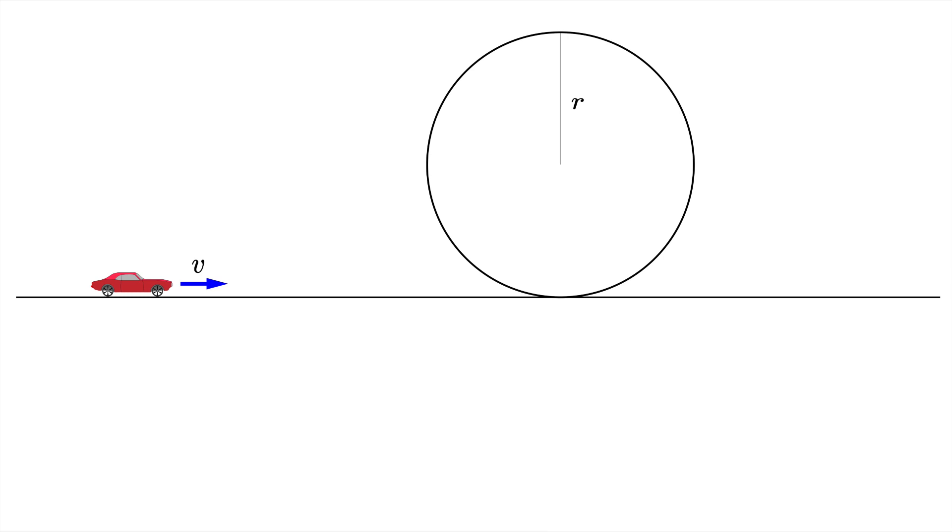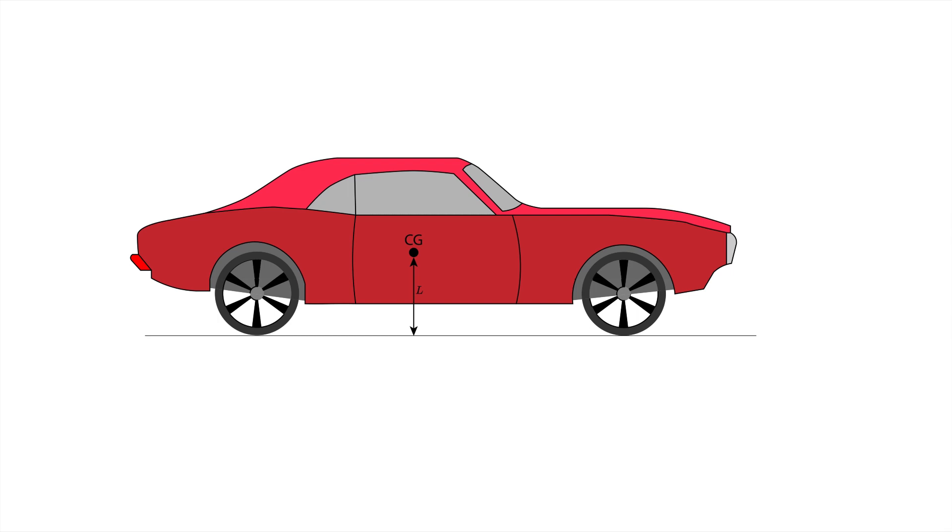Obviously we assume a constant gravitational acceleration of 9.81 meters per second squared. To calculate this precisely we also need to know the position of the car's center of mass, which we denote as CG, and its height from the ground as L.